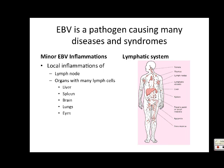EBV causes minor inflammations throughout the body and attacks certain organs. All of these organs are organs with many lymph cells - there are lots of lymph cells and many lymph nodes in these organs. This is essentially a map of the organs of the body that have many lymph cells, and EBV attacks areas of the body that have lymph cells.